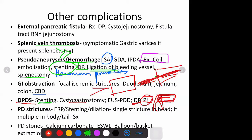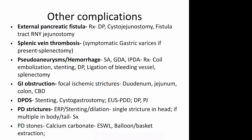For pancreatic duct strictures, you can do stenting or dilatation - but only when there is a single stricture in the head region, not when there is tail disease or multiple strictures in head, body, and tail. In that case you need a drainage procedure like pancreaticojejunostomy. Pancreatitis can also result in PD stones, especially with chronic pancreatitis. These stones are harder than CBD stones and are made of calcium carbonate. To tackle them, you can do balloon extraction, basket extraction, or lithotripsy with EHL/ESWL. If there are associated strictures or disease in the body and tail that cannot be tackled endoscopically, you need a surgical procedure.